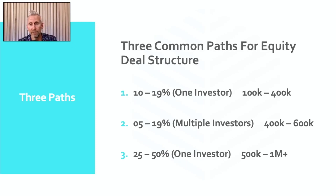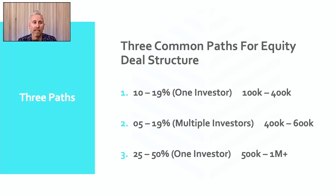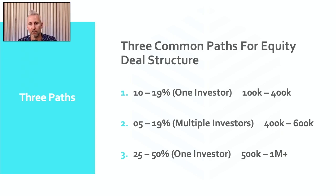With this deal structure, I'm going to simplify it into three different paths: option one, two, and three. These are what I would say are the common paths. There are a hundred different things you could do — you can ultimately structure this however you like — but my objective for this call is to make it simple.